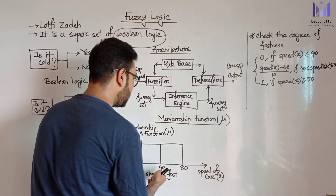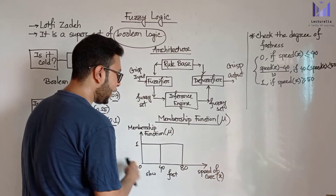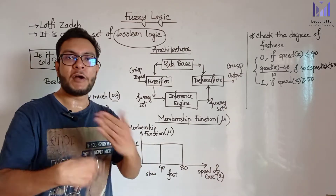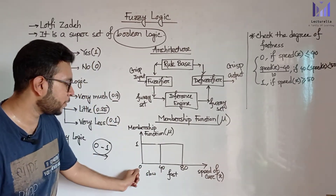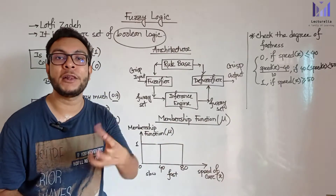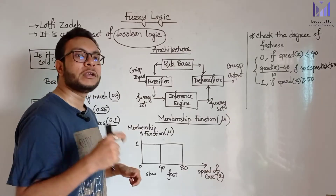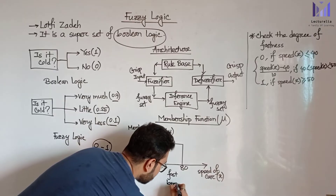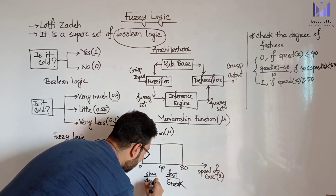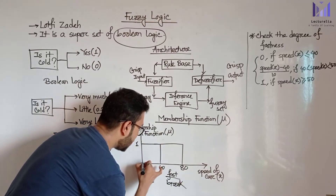If the speed is 0 to 40, it is considered slow. If the speed is 80 or above, it is considered fast. The transition between slow and fast is gradual. If the speed is fast, apply brakes; if the speed is slow, apply the accelerator. Speed values can range from 0.1 to 2.0.